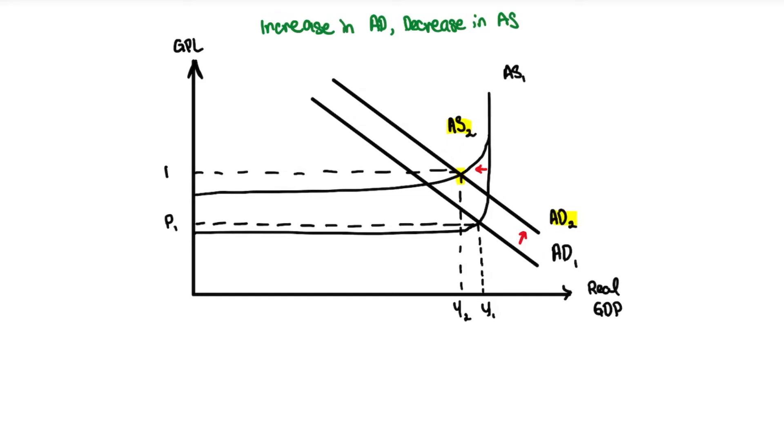Similarly, you have to identify which one is certain and which one is uncertain. We'll look at the cases now. Definitely, your price GPL will actually rise. Your real GDP will be the one that's uncertain. You can draw the arrow for P2 and maybe a question mark for your real GDP because it really depends on the extent of change.